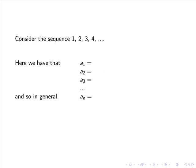Consider the sequence 1, 2, 3, 4. Here we have that a₁ or the first term equals 1, a₂ the second term equals 2, a₃ the third term equals 3.